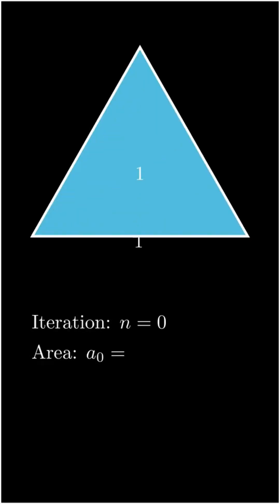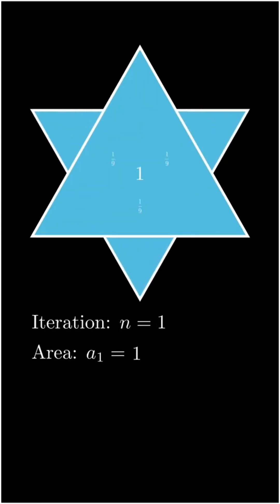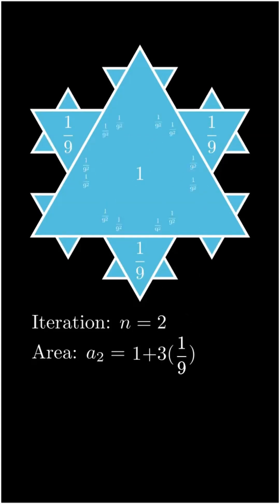This breakthrough introduced the concept of non-integer dimensions and laid the foundation for fractal geometry. In 1904, Helge von Koch introduced the Koch Curve, a self-similar figure that looks the same at every scale of magnification.